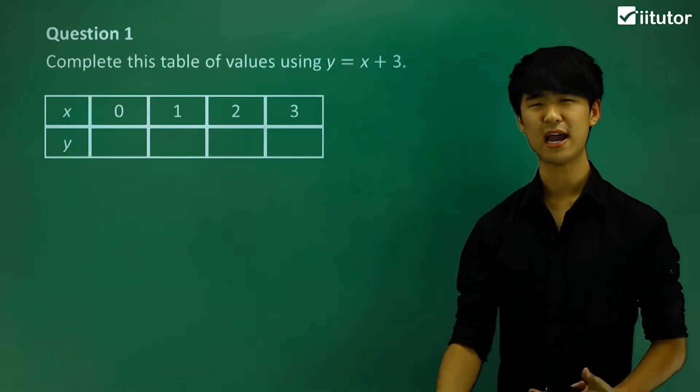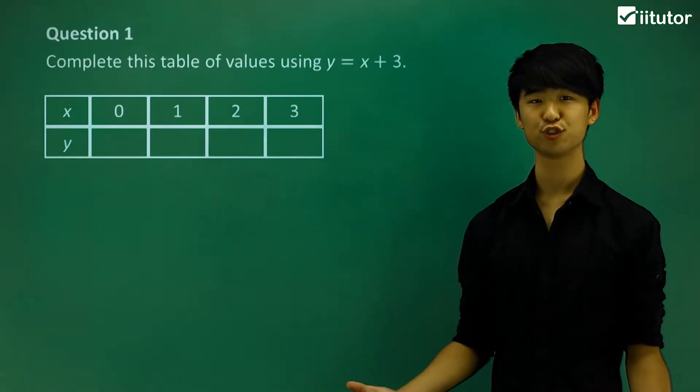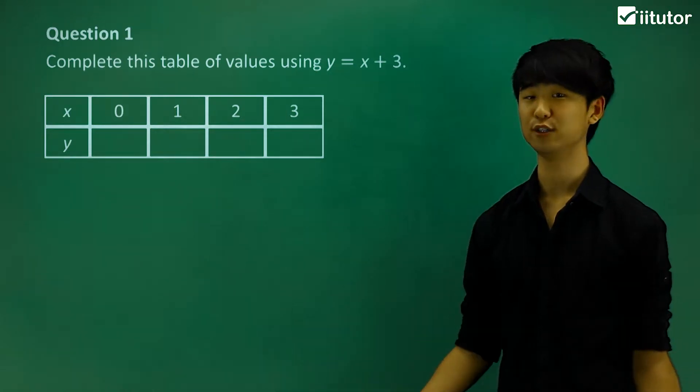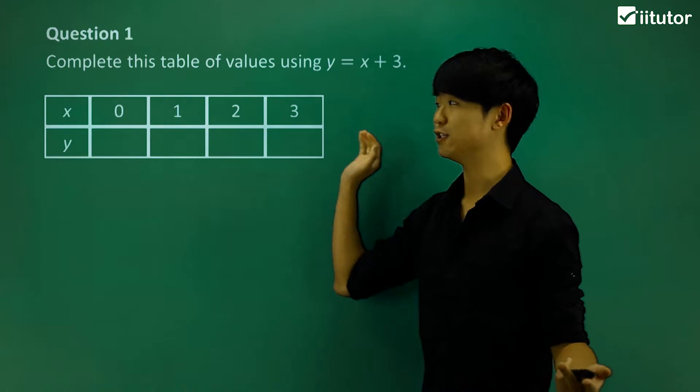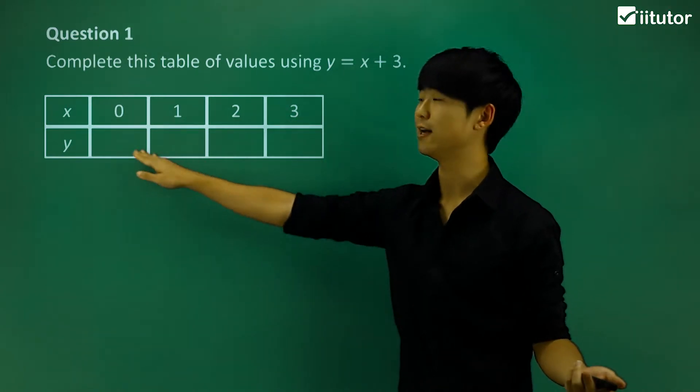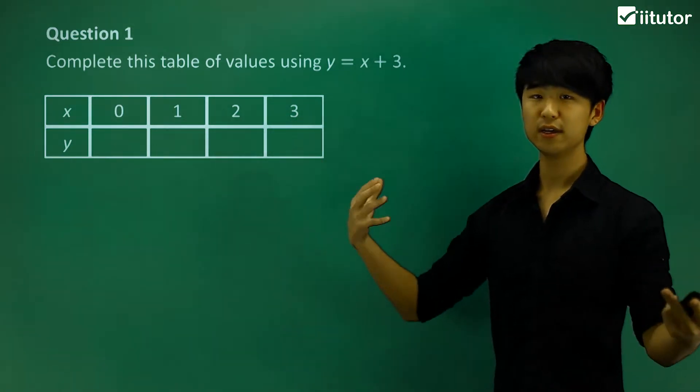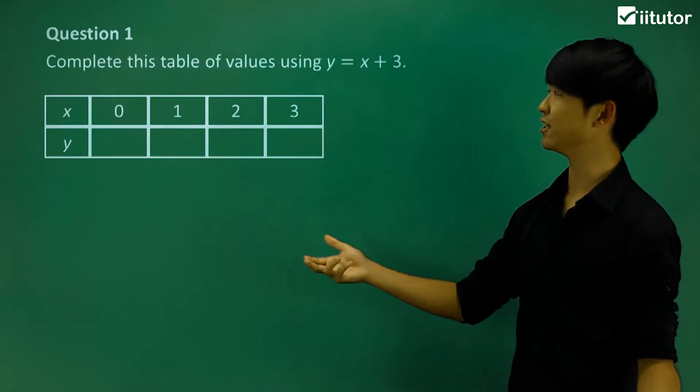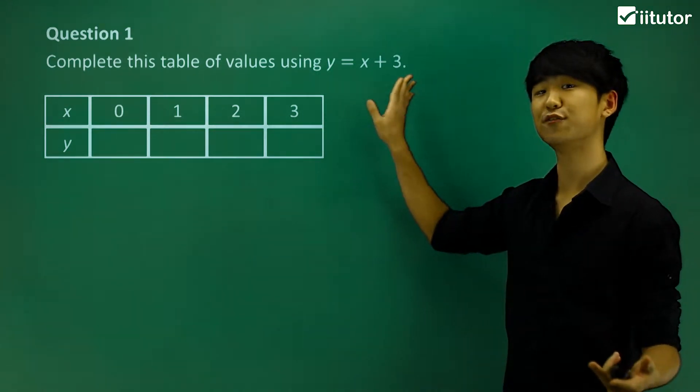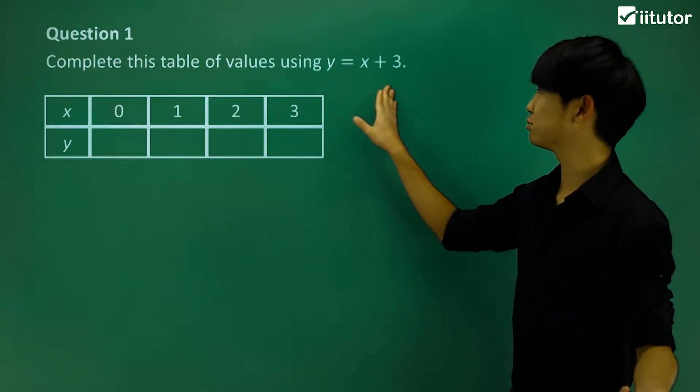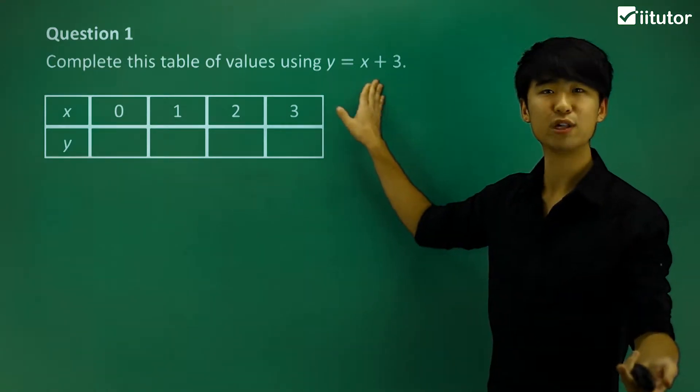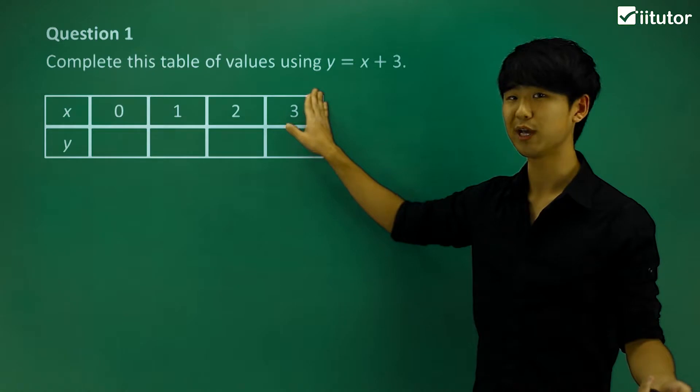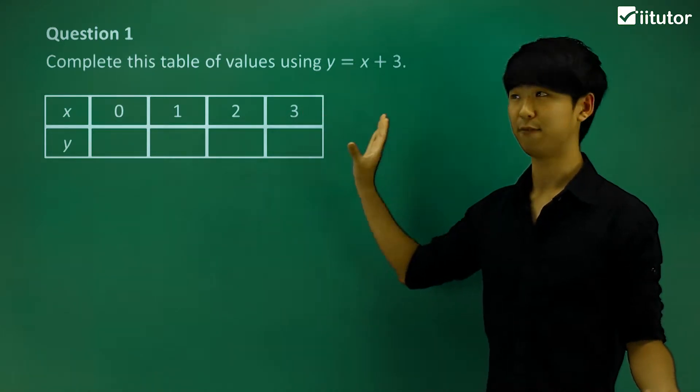We're going to be looking at how to complete table of values. If you're not quite sure what table of values is referring to, it's referring to this table here. We're given a lot of values for the x, and we're going to find the values for the y's. Now how do we complete them? We should be given some sort of relationship. If you have a look at this equation, y equals x plus 3, we can see that for every x value, they will have a corresponding y value. That's what we're going to be focusing on.